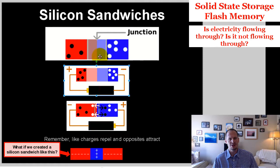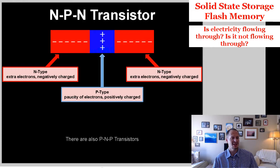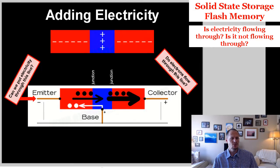So let's continue building our silicon sandwiches. We've already looked at the basic n-type and p-type sandwich, but what if we create one with an n-type, a p-type, and an n-type together? That's an NPN transistor. There are also PNP transistors where the setup is flipped. I don't know the advantages and disadvantages of the two, but what I read about are the NPN types — negative, positive, negative type of silicon sandwich.